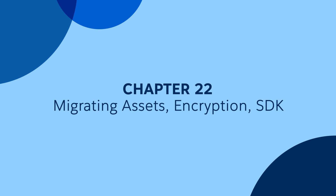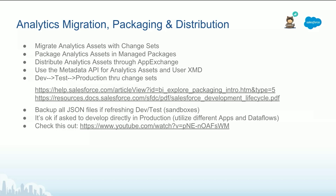In this chapter, we are going to cover three different topics. It's going to be just brief slides to guide you to where to go and dig deeper if you need to. The first one is migrating assets. There are several ways you can migrate assets, dashboards, or datasets and data flows between environments. The most recommended one is using change sets, which will carry all the dependencies and make it easier to copy from sandbox to production, for example.